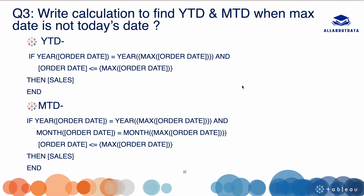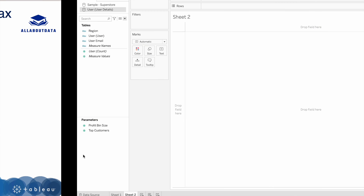Let's move to our next question: write a calculation to find YTD and MTD when the max date is not today's date. YTD stands for Year-to-Date and MTD stands for Month-to-Date. Here is the calculation for YTD and this is for MTD. Let's create YTD and MTD in Tableau as well.